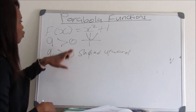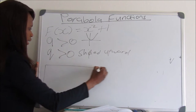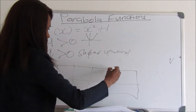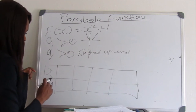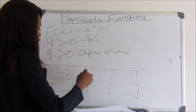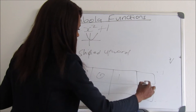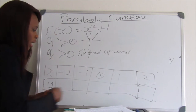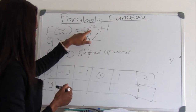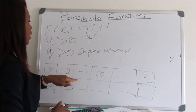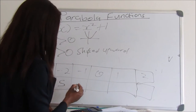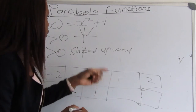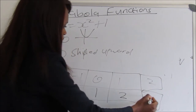To draw this graph, we need a table with x and y values, starting from negative two to two. Substituting each x into the equation: f(-2) = (-2)² + 1 = 5, f(-1) = (-1)² + 1 = 2, f(0) = 0 + 1 = 1, f(1) = 1 + 1 = 2, and f(2) = 4 + 1 = 5.